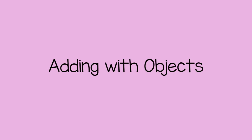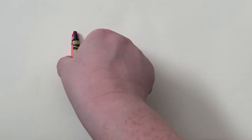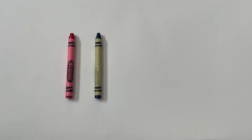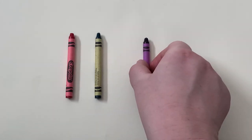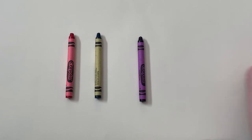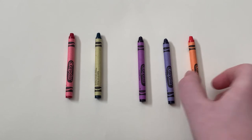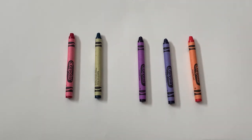You can help a child learn about adding by using any small objects. You can place two crayons in front of the child and ask, how many crayons are there? The child can count one, two, and say two. Then you could add three more crayons and say...